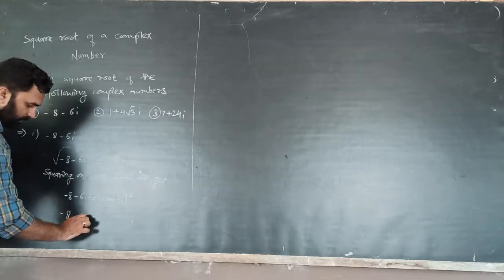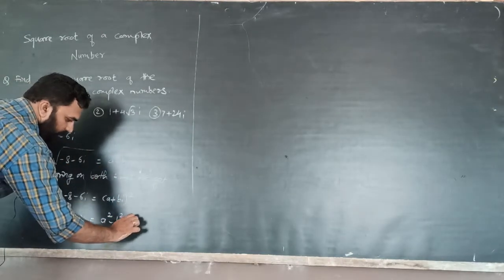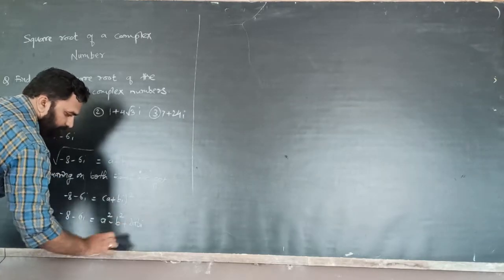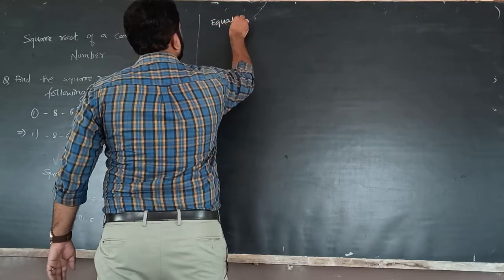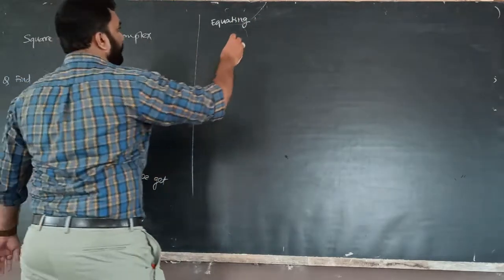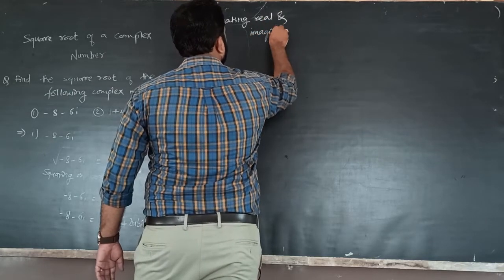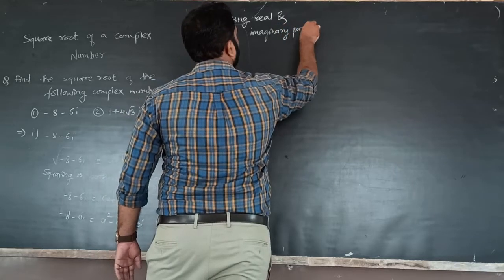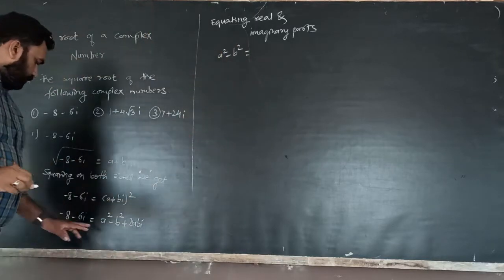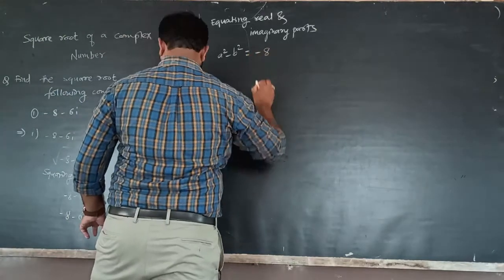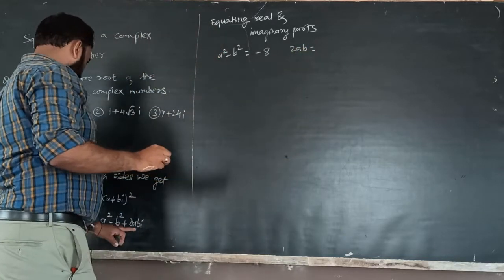We have to find the square root of minus 8 minus 6i. Expanding, that gives a squared minus b squared plus 2abi. Equating real and imaginary parts, we get a squared minus b squared equals minus 8, and 2ab equals minus 6.